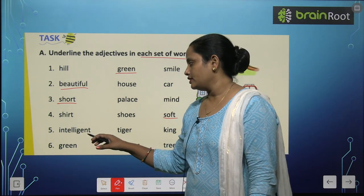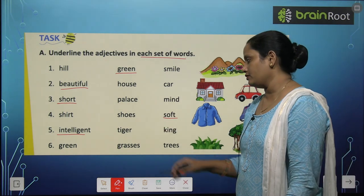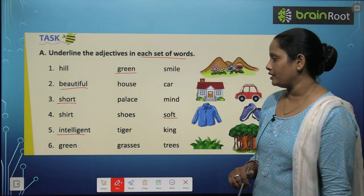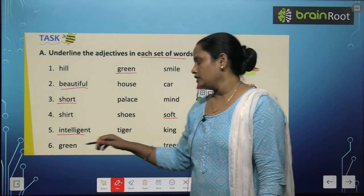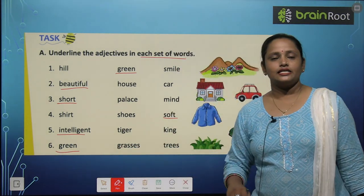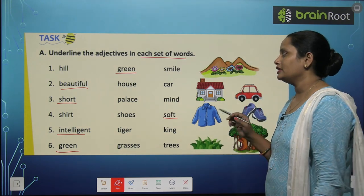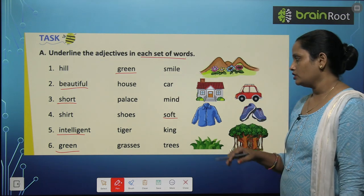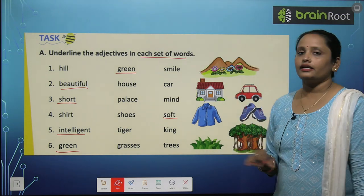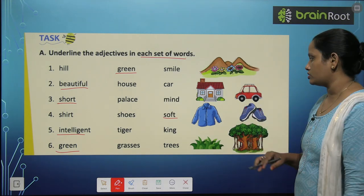Intelligent — describing word. Tiger — naming word. And king is also a naming word. Green — describing word. Grass is naming word. And trees also naming word. So the words we have underlined here are the adjectives or the describing words.